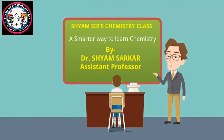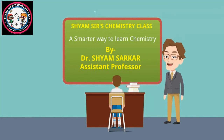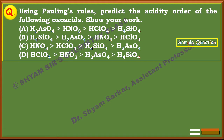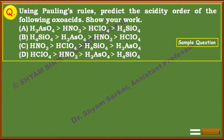Hi, I am Dr. Samsharkar. Welcome to my class. Today we will solve problems where they ask about the acidity of different oxoacids. Here they have asked for the acidity order of four oxoacids: H₃AsO₄, HNO₃, HClO₄, and H₄SiO₄. You have to find out the correct order of acidity of these four oxoacids.